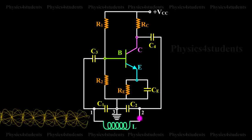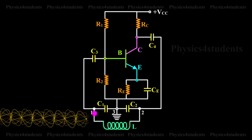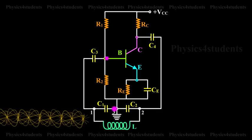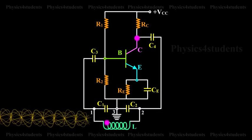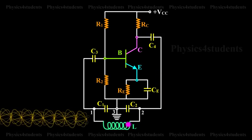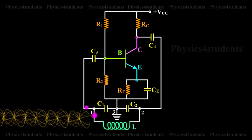If terminal 1 is at the positive potential with respect to terminal 3 at any instant, then terminal 2 will be at negative potential with respect to 3, since 3 is grounded. Hence, points 1 and 2 are 180 degrees out of phase.